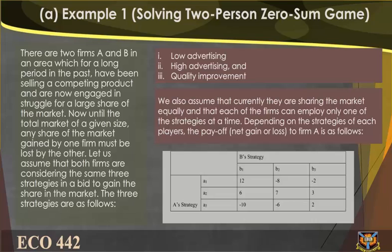Example 1: Solving a two-person zero-sum game. There are two firms, A and B, in an area which for a long period in the past have been selling a competing product and are now engaged in a struggle for a large share of the market. Both firms are considering the same three strategies: one, low advertising; two, high advertising; and three, quality improvement.